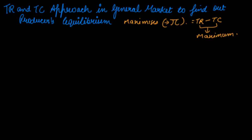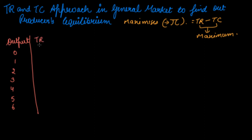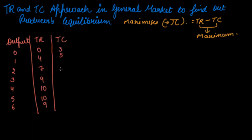Let's see how to present your answer on the answer sheet so you can score good marks. We will take a table with output: 0, 1, 2, 3, 4, 5, and 6. Total revenue values are: 0, 4, 7, 9, 10, 10, and 9. Total cost values are: 3, 5, 6, 7, 9, 12, and 13.